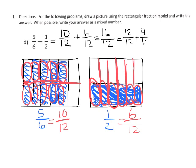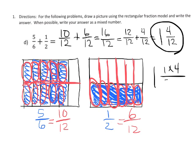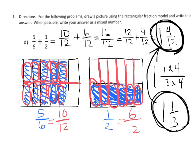We can change that to twelve-twelfths plus four-twelfths, which equals one and four-twelfths. Our fifth graders probably know that four-twelfths simplifies: four times one over four times three, so one and four-twelfths equals one and one-third. Either answer would be appropriate, or we could even leave it as sixteen-twelfths.